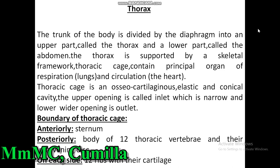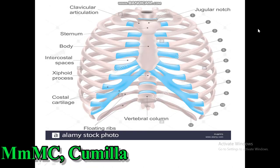The thoracic cage is an osteocartilaginous, elastic, and conical cavity. The upper opening is called the inlet, which is narrow, and the lower wider opening is the outlet. The boundary of the thoracic cage is anteriorly the sternum, posteriorly the bodies of the 12 thoracic vertebrae and their intervertebral discs, and on each side the ribs with their cartilage.